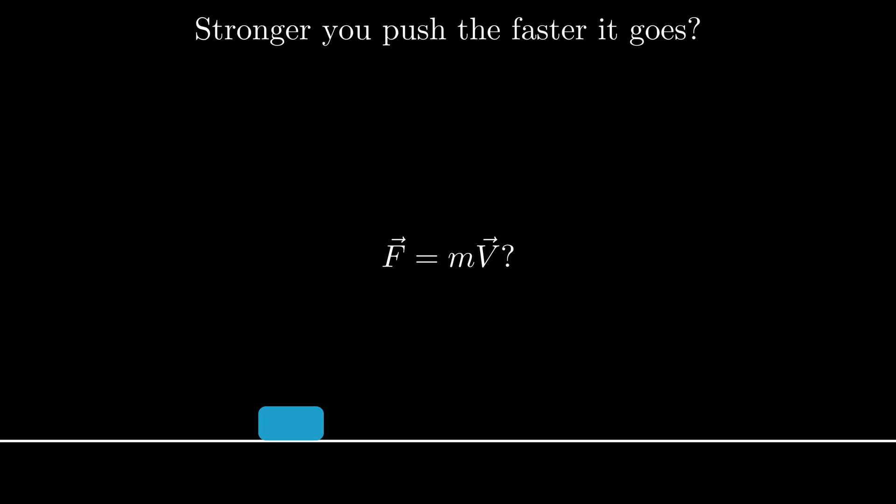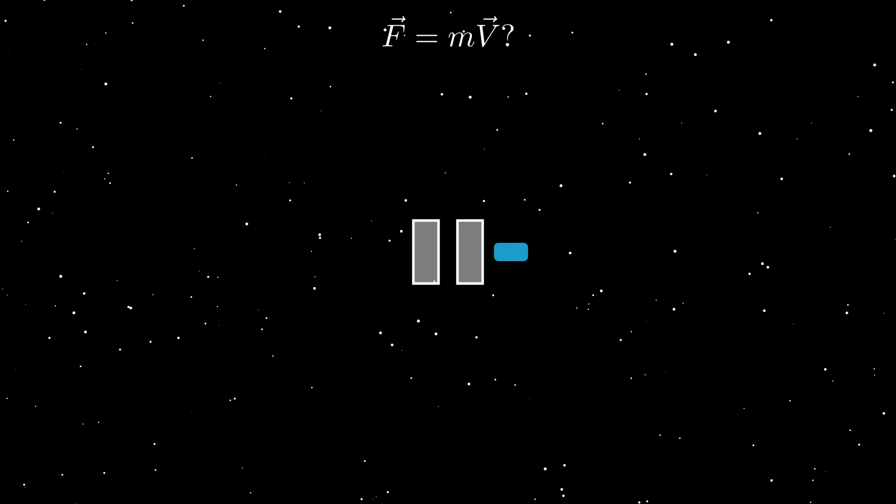Now let's give the body an initial push. Here we can see the body still has some speed however we have stopped pushing it so the force must be zero at this moment. If you were to plug this into the equation you'll get zero equals MV and this basically results in speed or velocity to be equal to zero which it isn't.